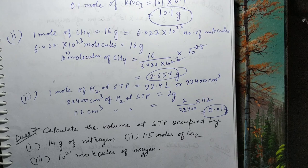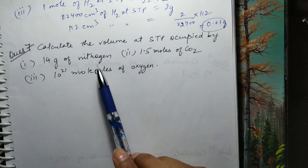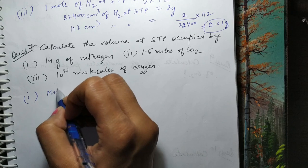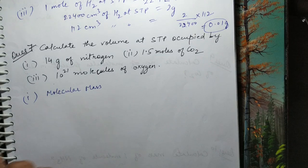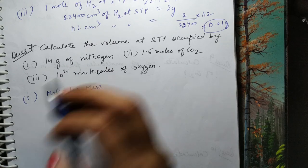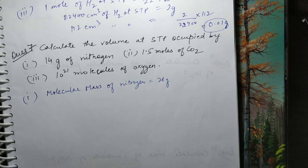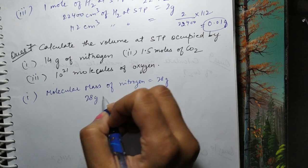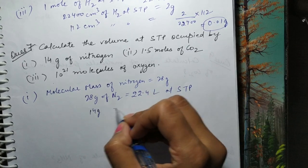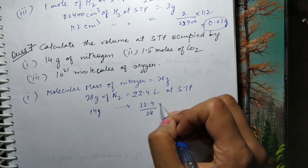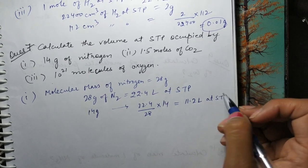Next question: calculate volume at STP occupied by — 3 parts hain. First: 14 gram of nitrogen. Molecular mass of nitrogen (N₂) = 28 gram. 28 gram of N₂ at STP = 22.4 liter. To 14 gram = 22.4 ÷ 28 × 14 = 11.2 liter at STP.